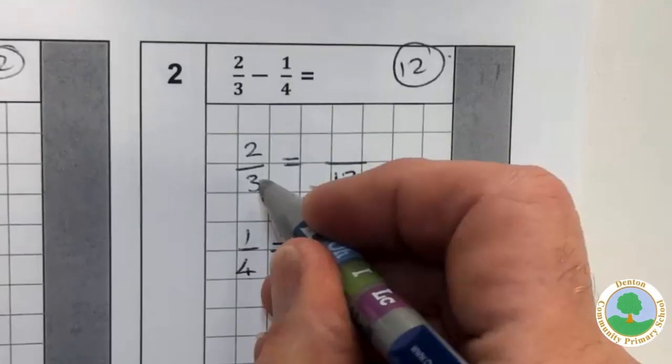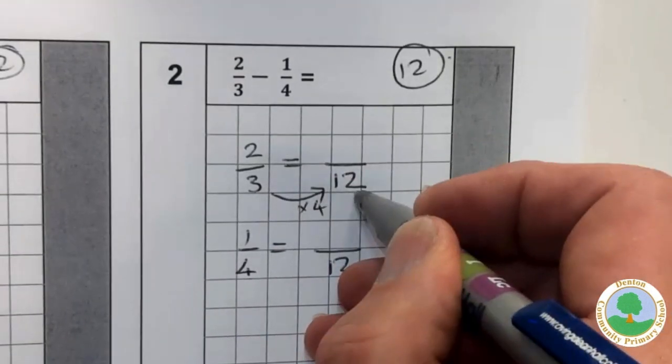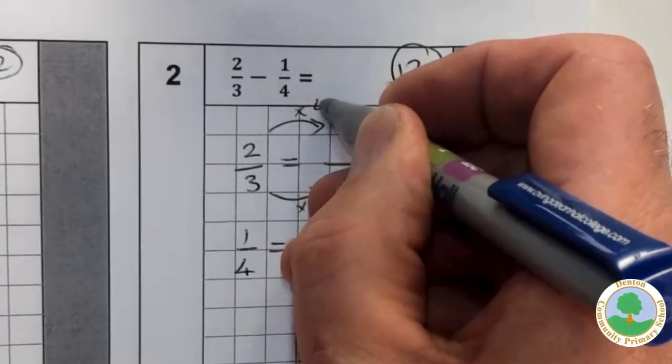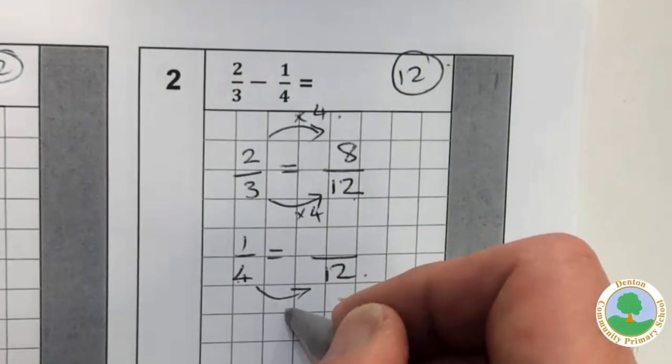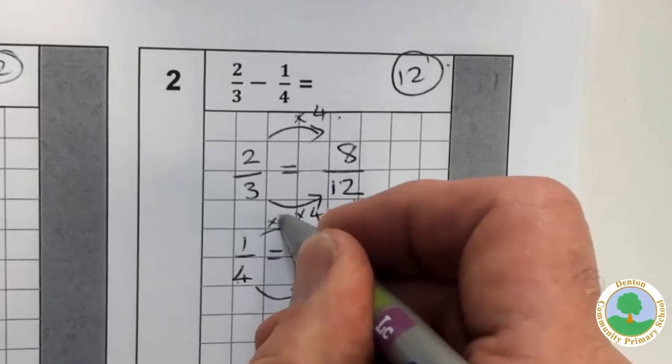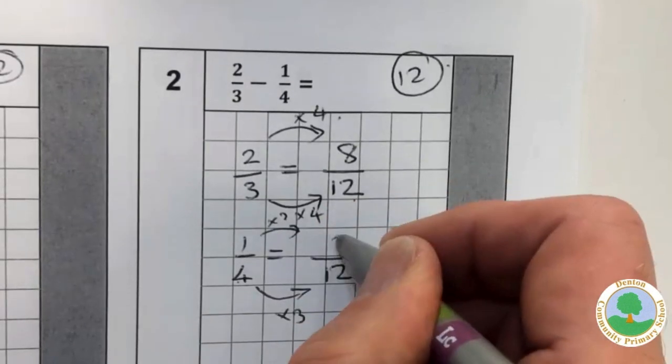Well, let's use the rule. Here's three times four, so two times four. Two thirds is the same as eight twelfths. And one quarter, here we go, times three, times three. One quarter is the same as three twelfths.